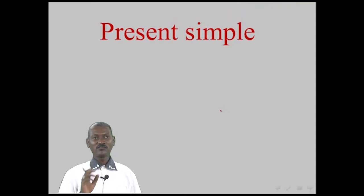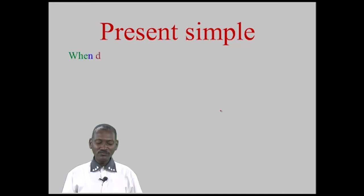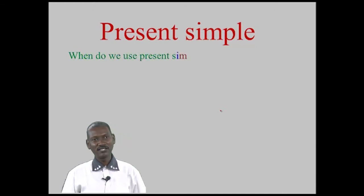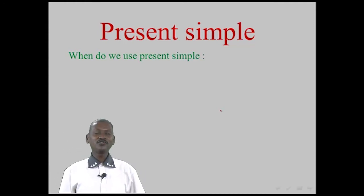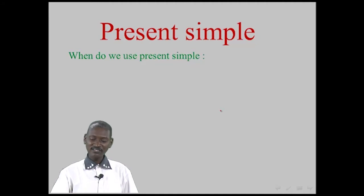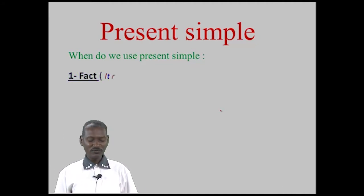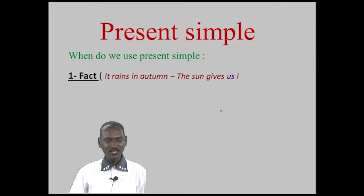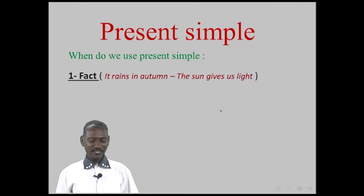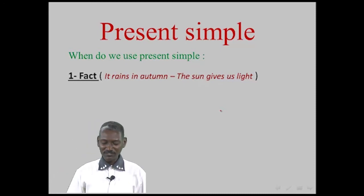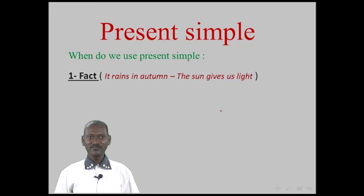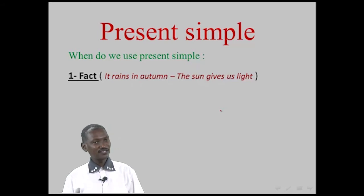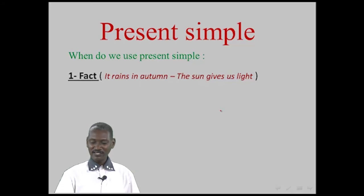The first question you have to ask yourself is: when do we use Present Simple? We use Present Simple in four cases. Number one, we use Present Simple for facts. When we speak about a fact, the sentence can be Present Simple. For example: 'It rains in autumn' and 'The sun gives us light' — both are facts.